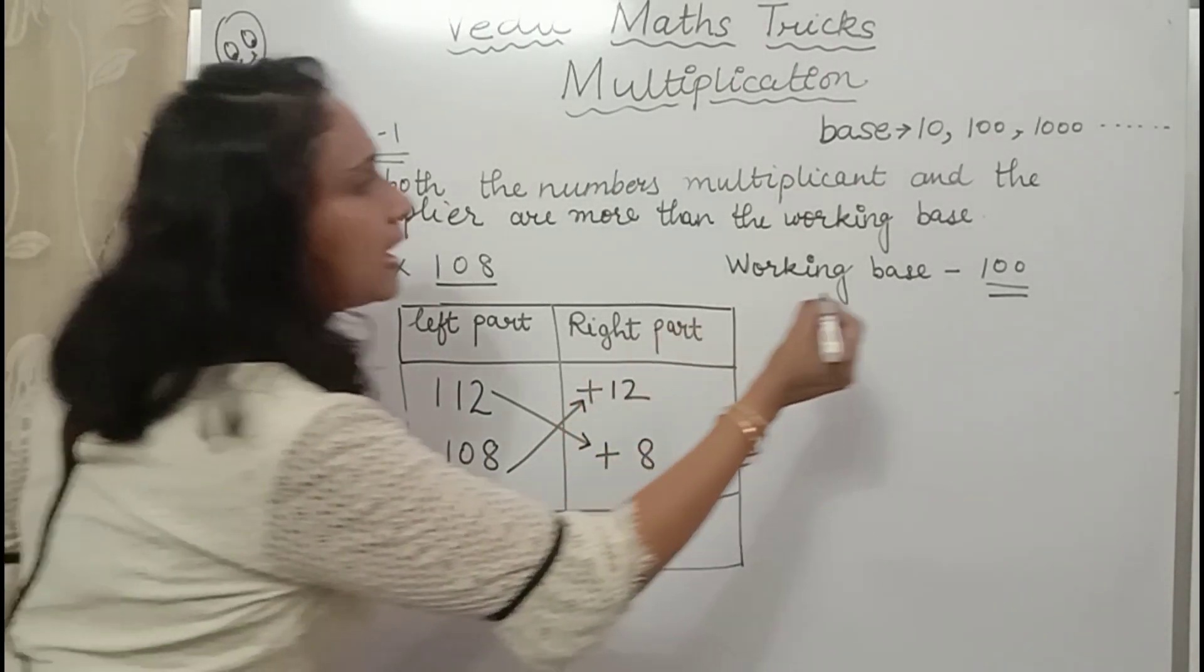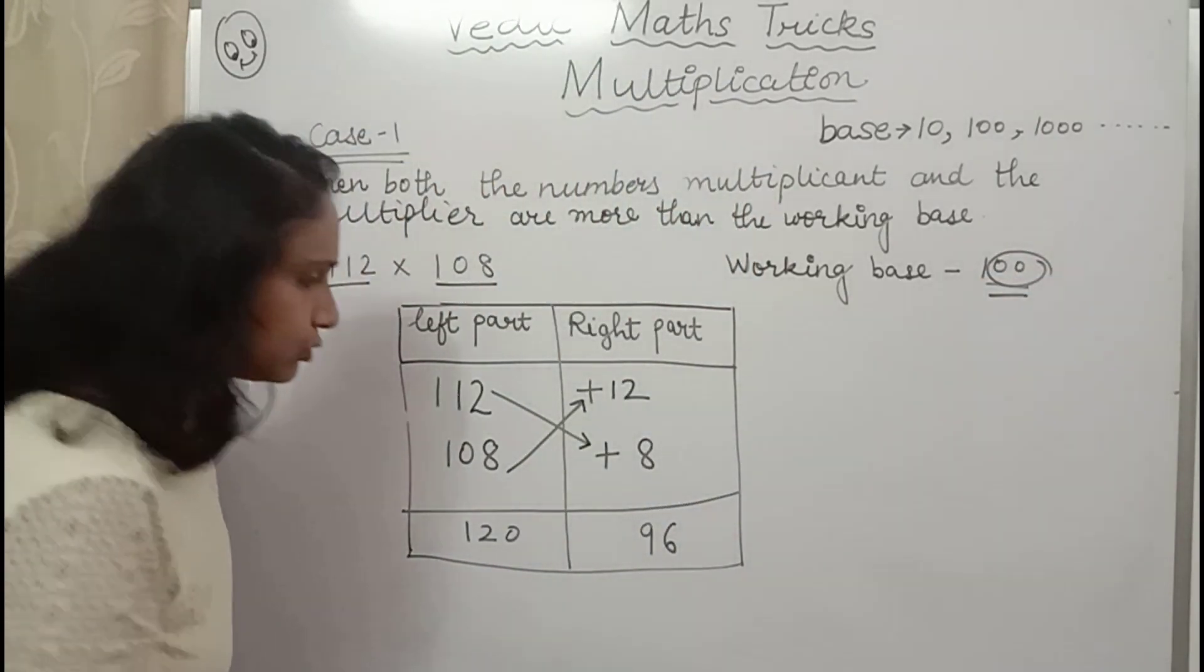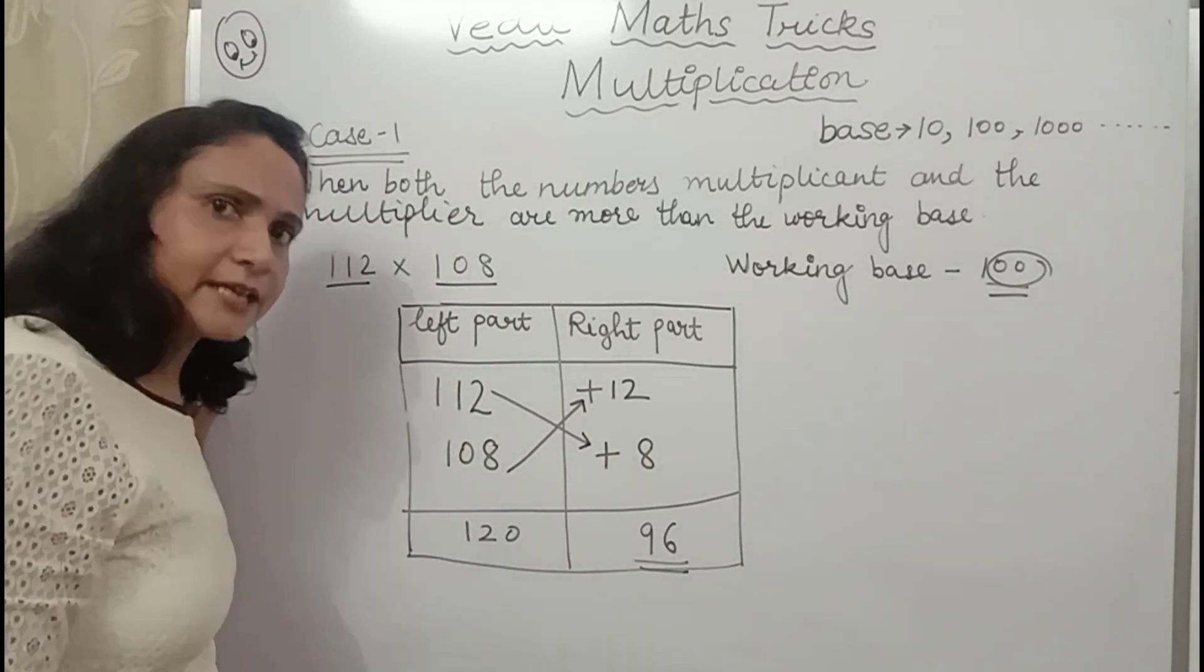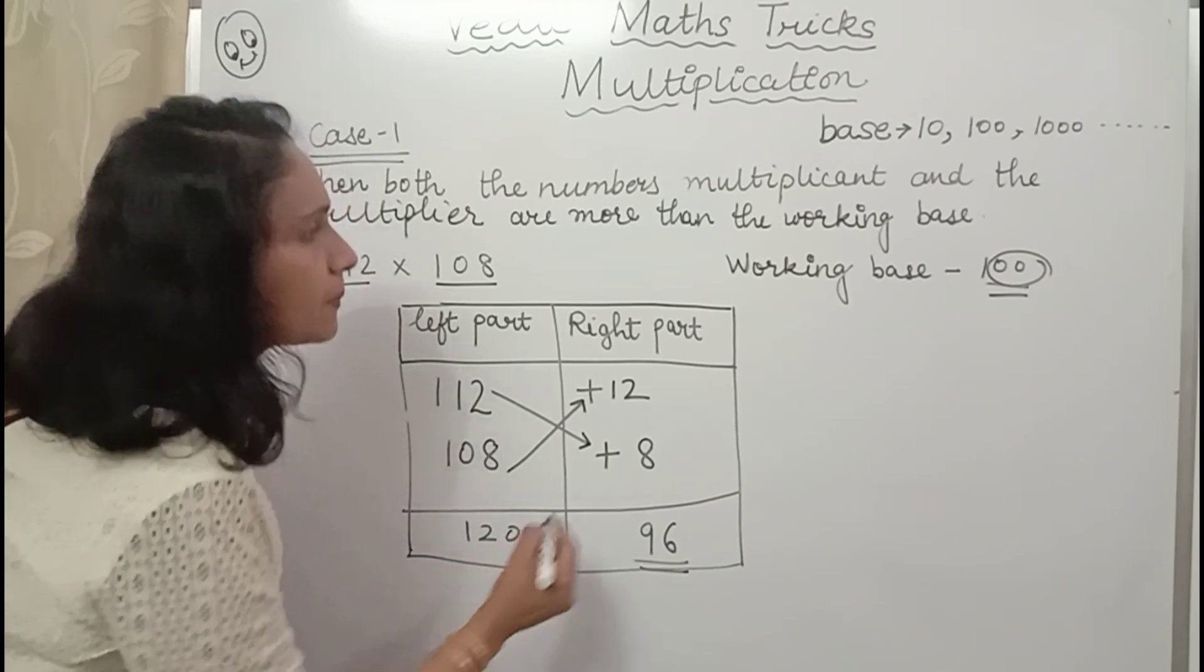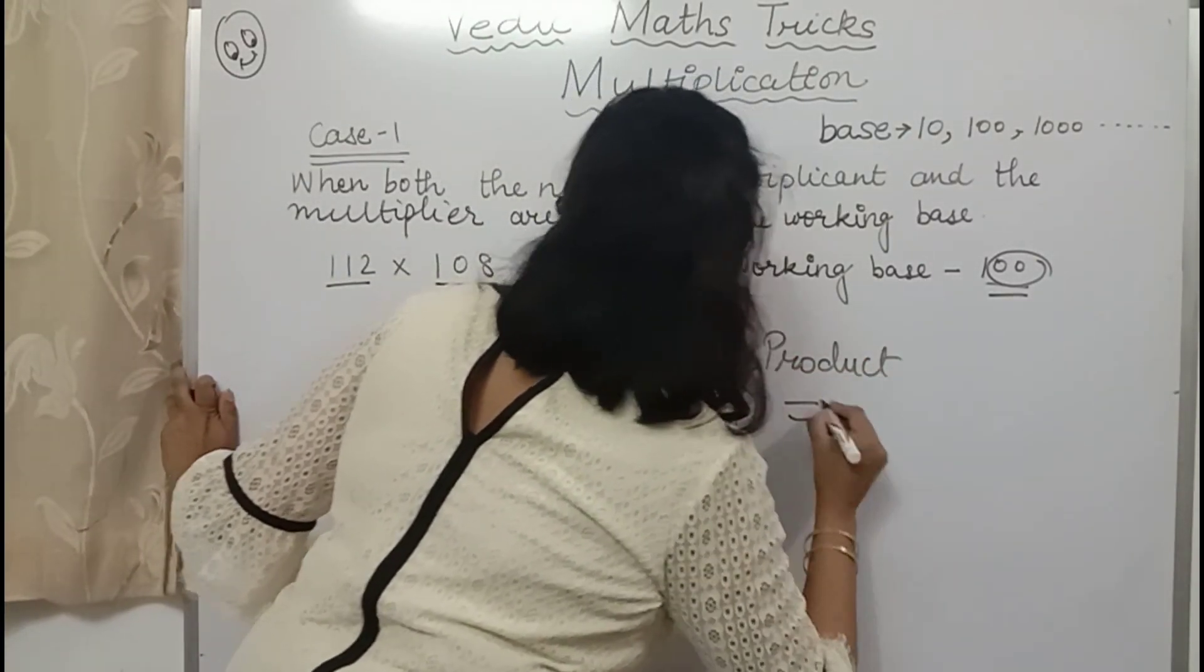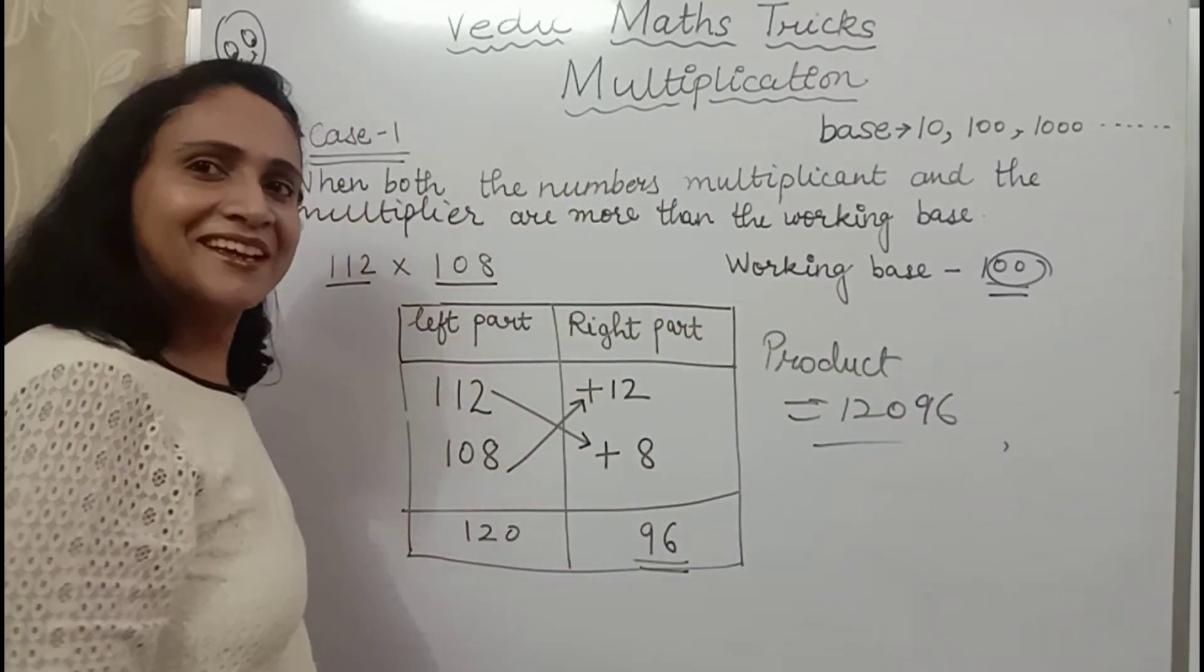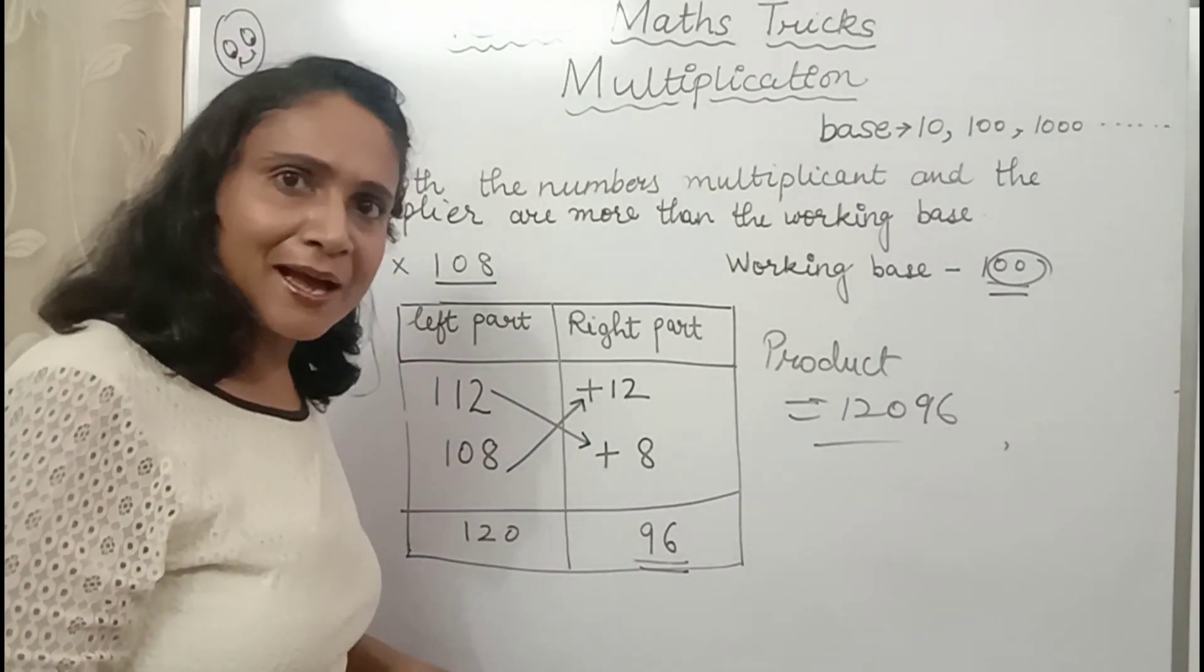So the answer is 12096. Now I will see how many zeros are there in working base. That is two zeros. So here I should have only two digits. Not more than two digits, not less than two digits. These cases we will study right now. So the product will be 12096. Easy, see within seconds we have done it. Now let's see the other example.